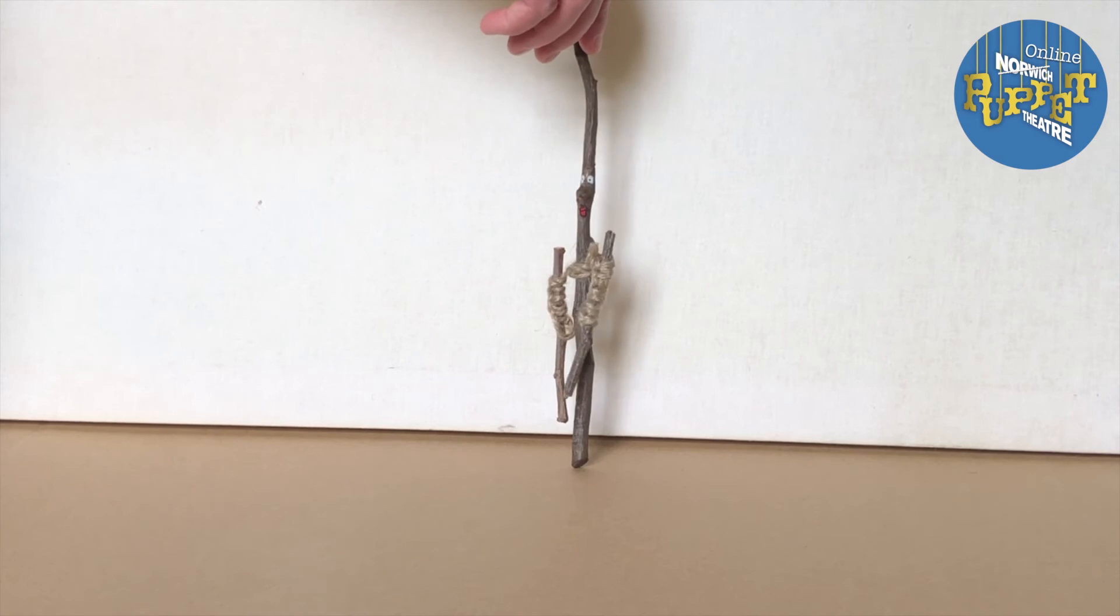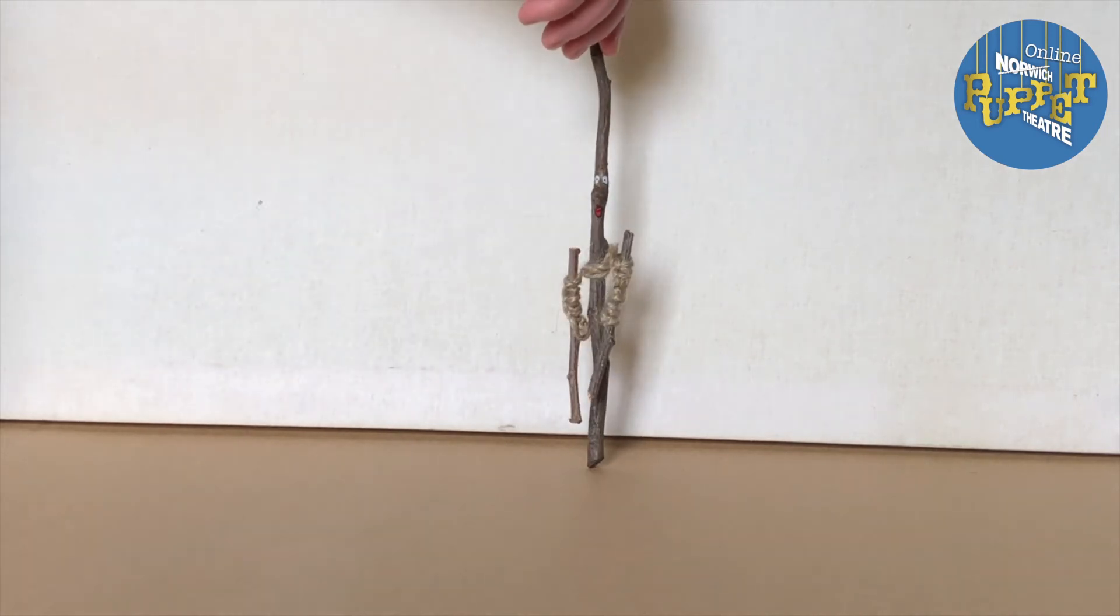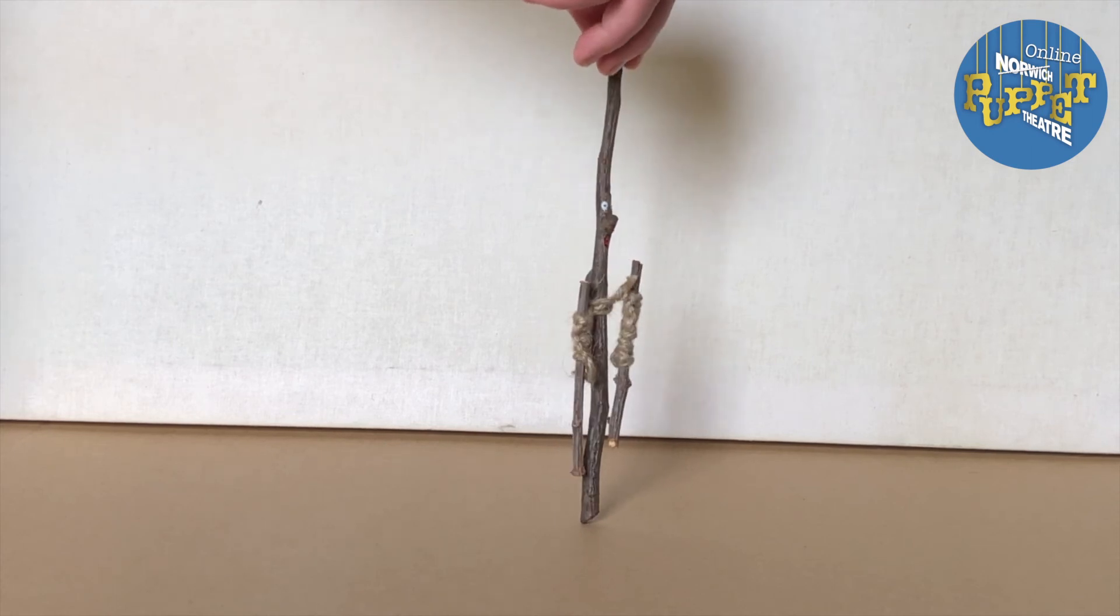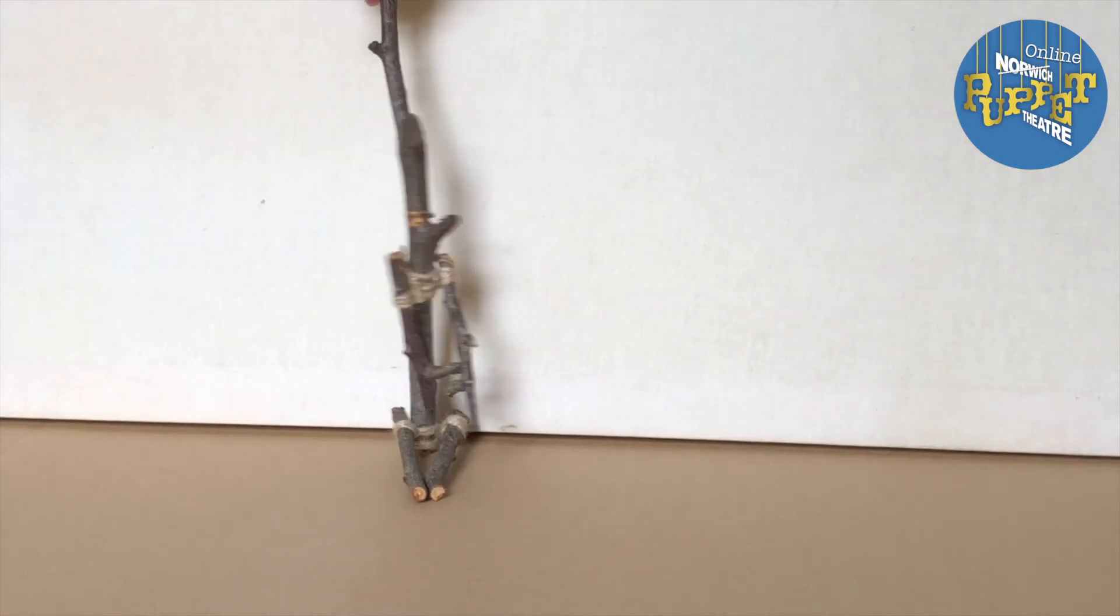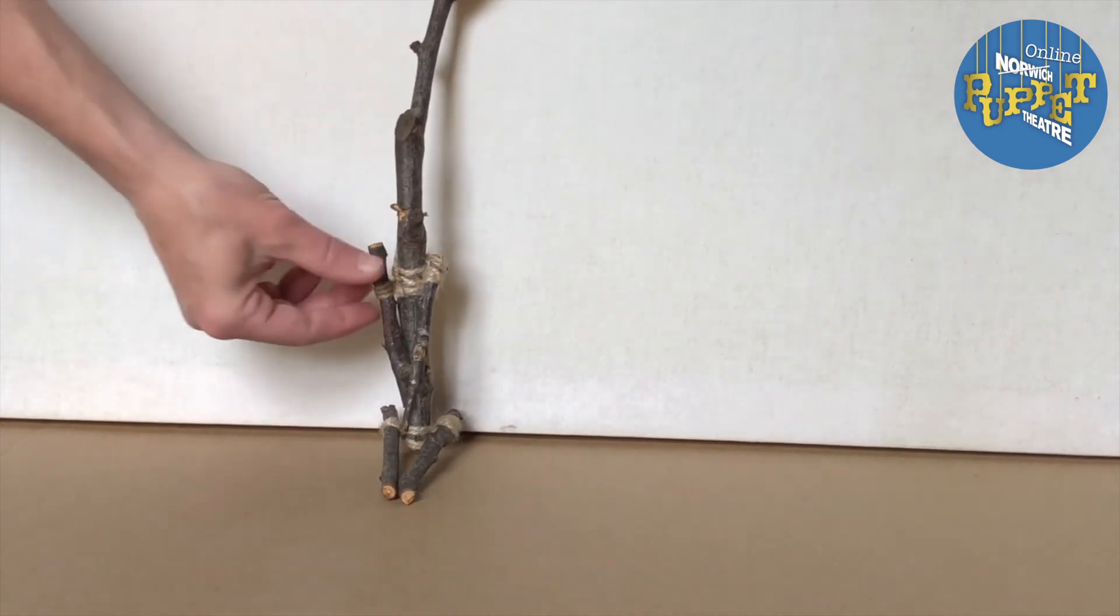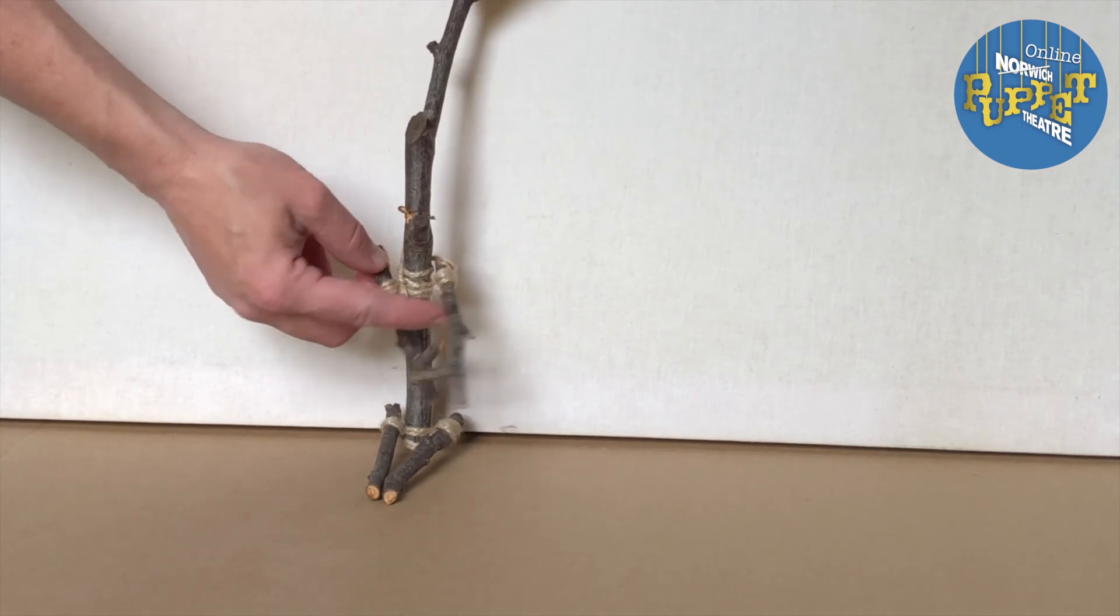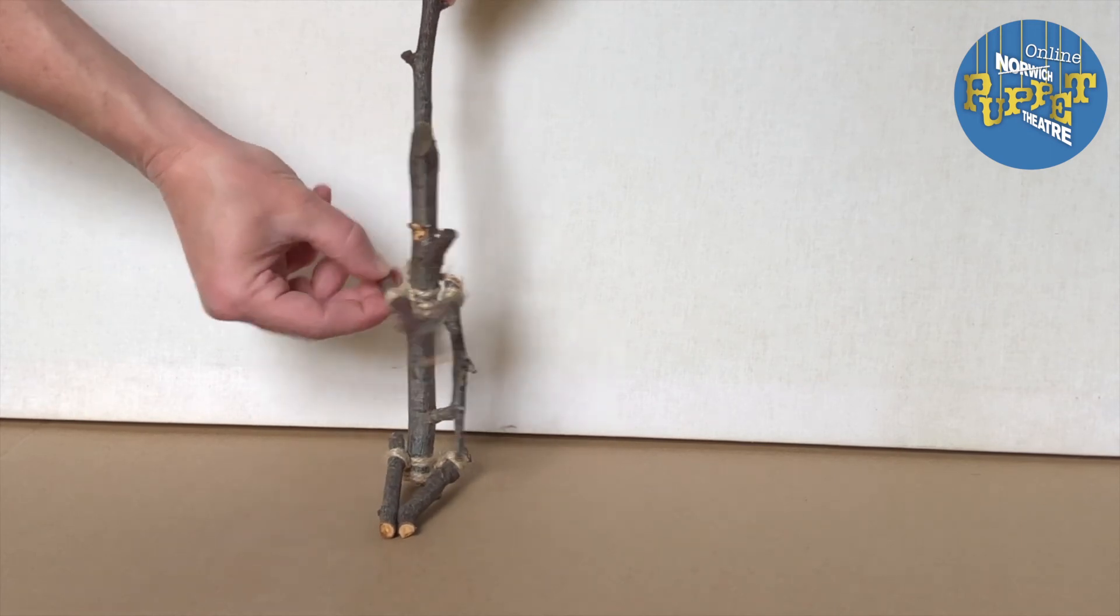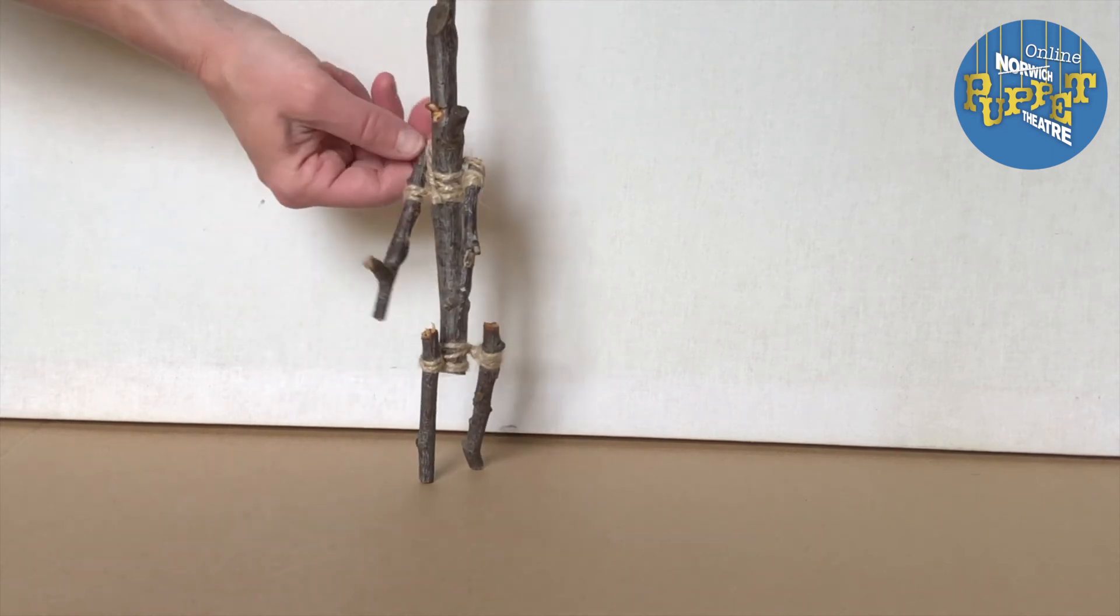You can also tie twigs together using twine to make puppet characters. So here I have one long twig which is my puppet's body and two shorter twigs which form the arms, and I've used some rope to tie them together. How you tie your sticks together can affect the movement of your puppet. So here I've added some legs as well, and I've just made sure that the way that I've tied my sticks together means that they will still move independently from one another.